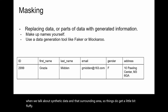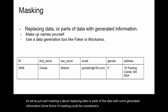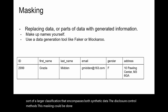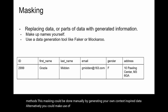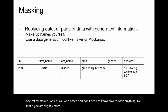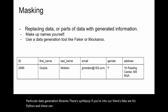Masking is about replacing data or parts of the data with some generated information. Some forms of masking could be considered a form of data synthesis, but this is a larger classification encompassing both synthetic data and disclosure control methods. Masking could be done manually by generating your own context-inspired data. Alternatively, you could use a data generation tool — there's a really good one called Mockaroo which is web-based and requires no coding. If you're slightly more technical, there are data generation libraries: Synthpop for R, Faker for Python, which can generate connected data such as names, emails, and more.